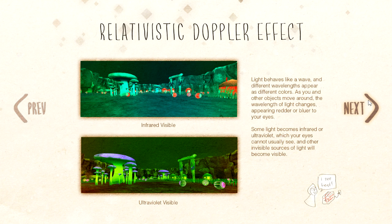Relativistic Doppler effect: light behaves like a wave, and different wavelengths appear as different colors. As you and other objects move around, the wavelength of light changes, appearing redder or bluer to your eyes. Some light becomes infrared or ultraviolet, which your eyes cannot usually see, and other invisible sources of light will become visible.